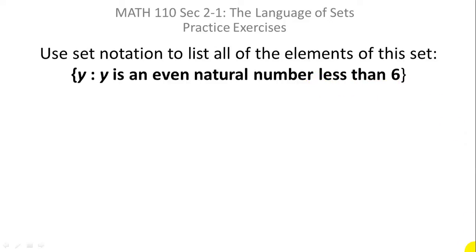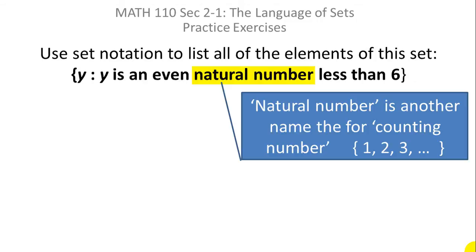Now obviously the first thing you have to think about is what is a natural number. A natural number is just another name for the counting number. So the numbers you count with one, two, three, four and on and on and on is a natural number.